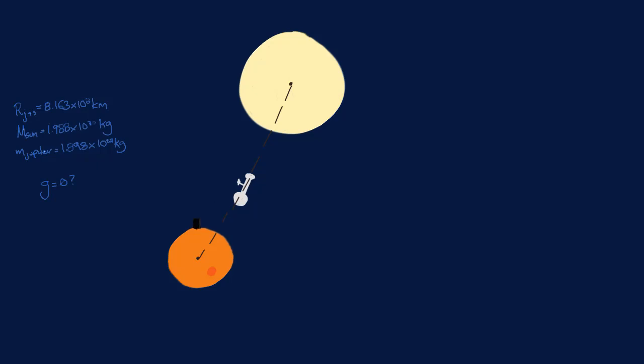This means we're looking for the point between the Sun and Jupiter where Jupiter's gravitational field is equal strength but opposite direction to the Sun's gravitational field. This is actually pretty similar to finding the point where the two gravitational forces are equal, but without the need to worry about the mass of the spaceship.